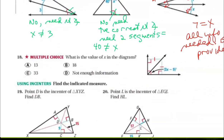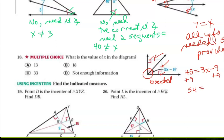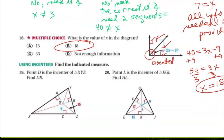Multiple choice: what's the value of X in the diagram? I have right angles and segments marked equal, so that angle is bisected. If it was a 90-degree angle, then each half has to be 45. So 3X minus 9 equals 45. Add 9: 54 equals 3X. Divide by 3: X equals 18.